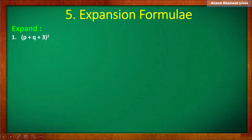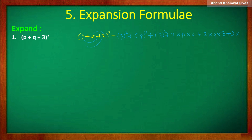First example: find the square of p plus q plus 3. Applying the expansion formula, it equals p² plus q² plus 3², plus 2 into p into q, plus 2 into q into 3, plus 2 into p into 3.